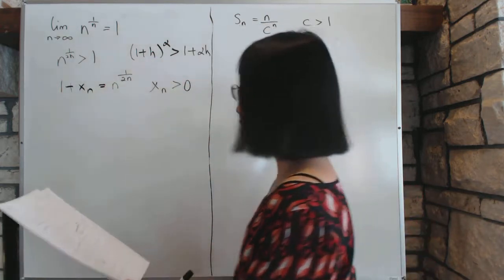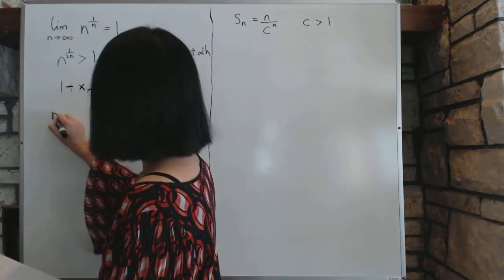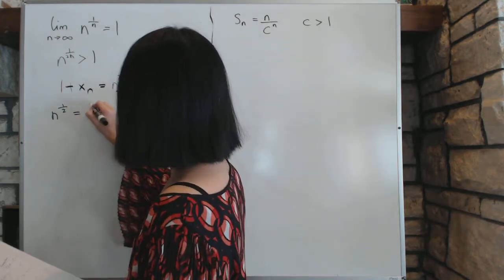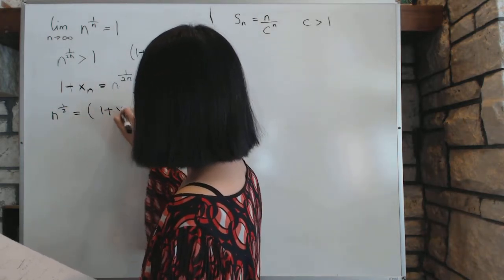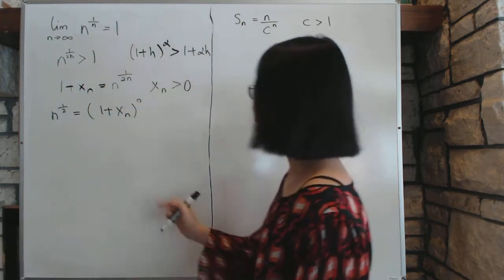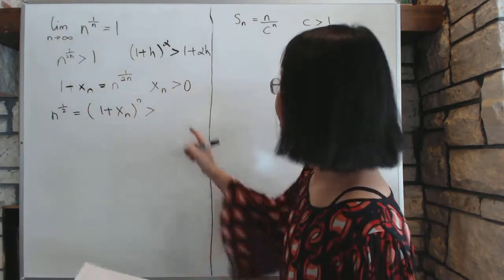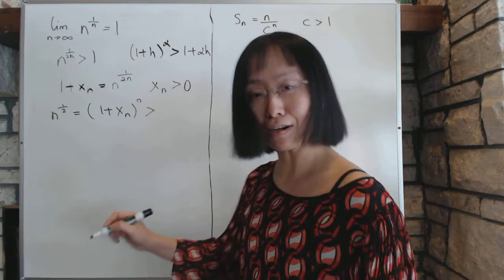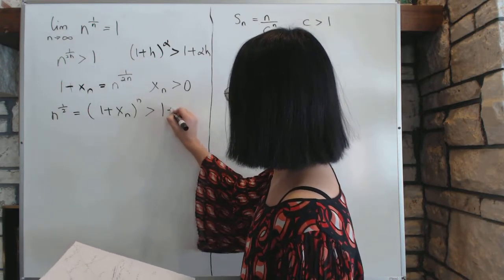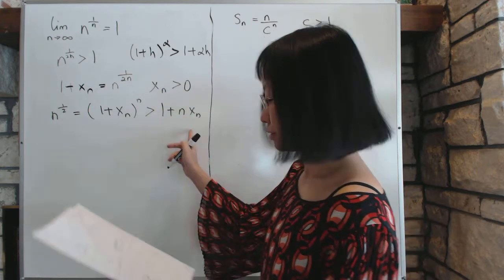So then the next thing we say is that then 1 is n to the power 1 and a half. n to the power 1 and a half from this equation is then equal to 1 plus xn to the power n. And then we apply this particular inequality that's very powerful for us. It has done everything so far, pretty much, in the limits of sequencing. So it's bigger than 1 plus n, xn.